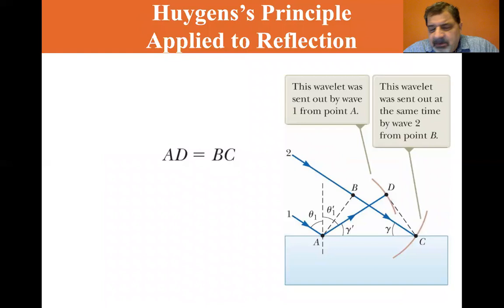We've got two rays, one and two. And at the point that A hits the reflecting surface, B is up here, still on its way to the reflecting surface. So after a time delta T, A has reflected and now it has created a wavelet at D. B is a new point source and it's got a wavelet at C.